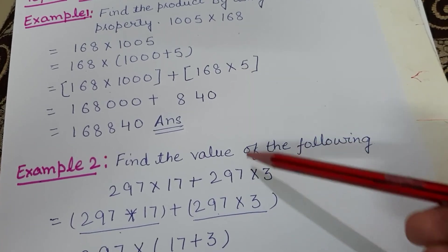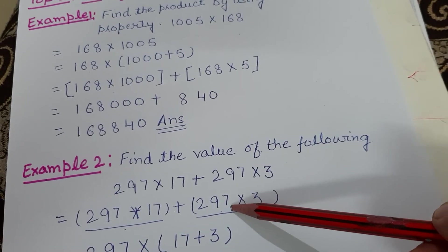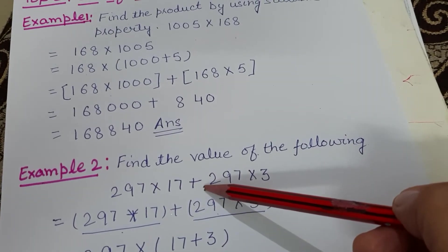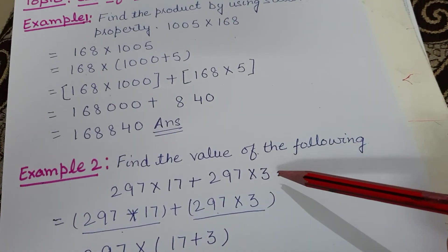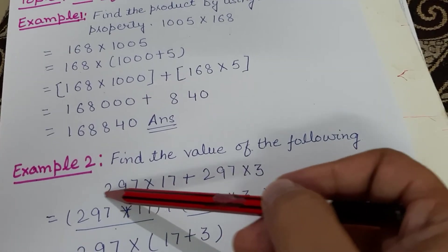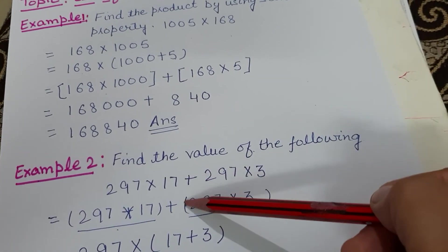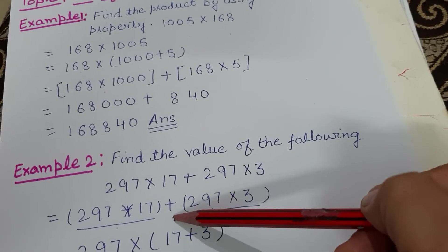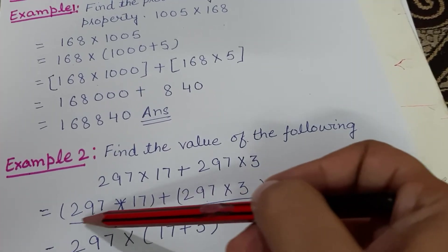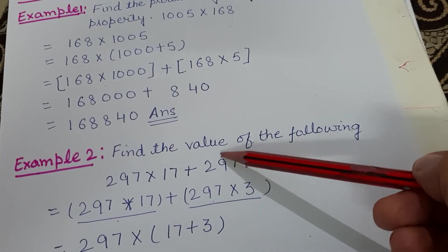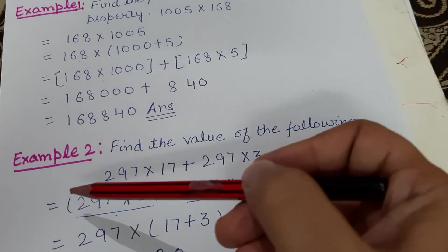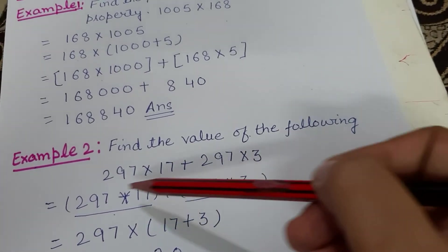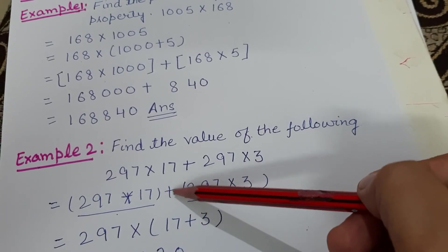See, this step: 297×17 + 297×3. It means there are two pairs because a plus sign is there—there may be plus, there may be minus. Make two pairs. In the second step, I have just put them in brackets because these are two pairs separated by a plus sign.